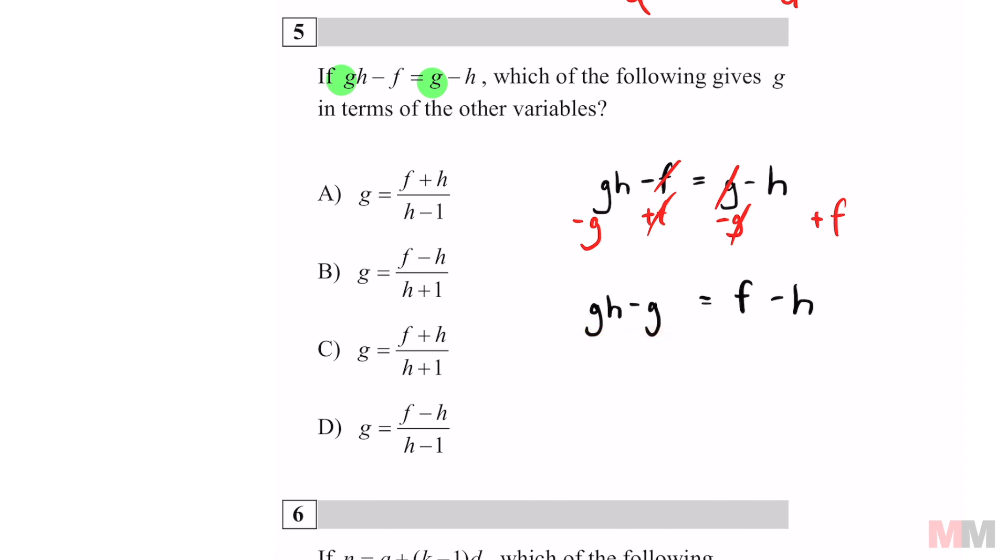So do what we did in question number three. If they have those in common, you can take it outside and leave the leftovers in the inside. So don't forget that this has a one if it doesn't have a coefficient. So that's going to be H minus one equals F minus H.